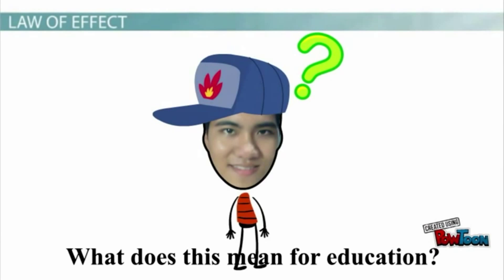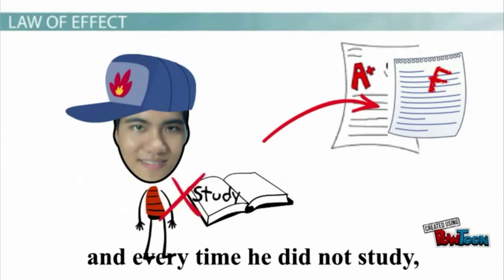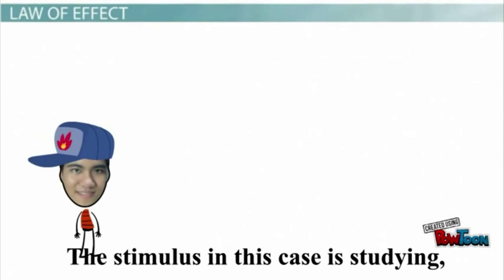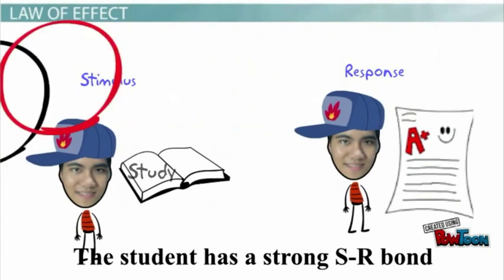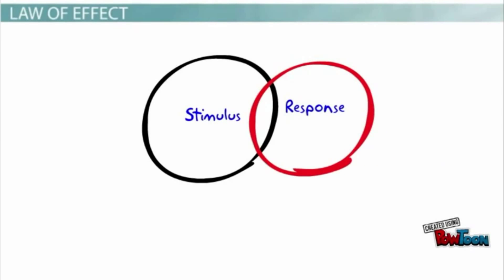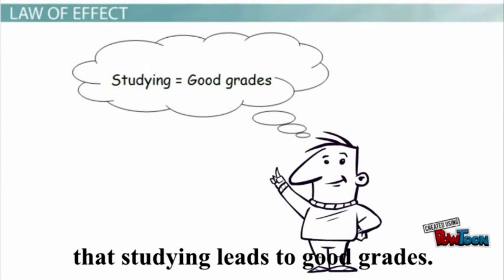What does this mean for education? Imagine that every time one of Vincent's students studied, he got a good grade, and every time he did not study, he got a bad grade. The stimulus in this case is studying, and the response is the grade. The student has a strong SR bond between studying and good grades. That is, the student believes that studying leads to good grades.